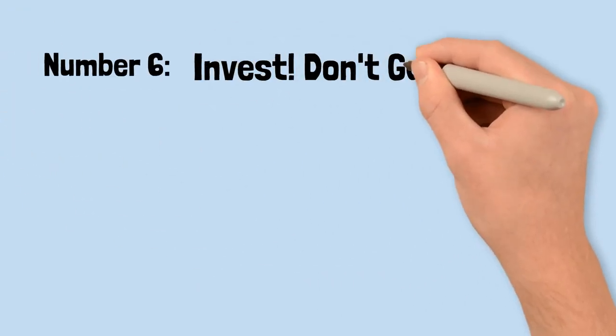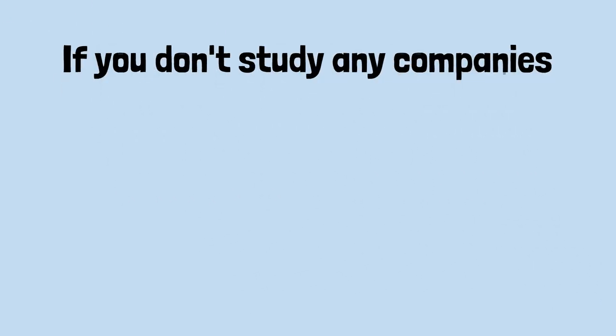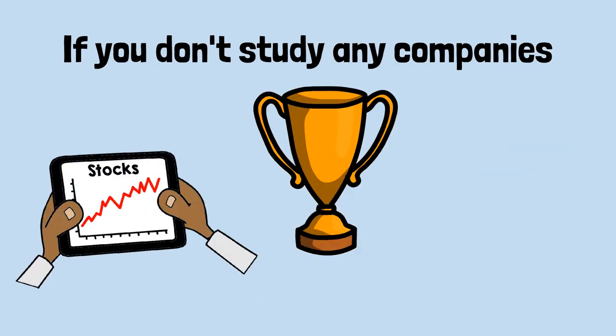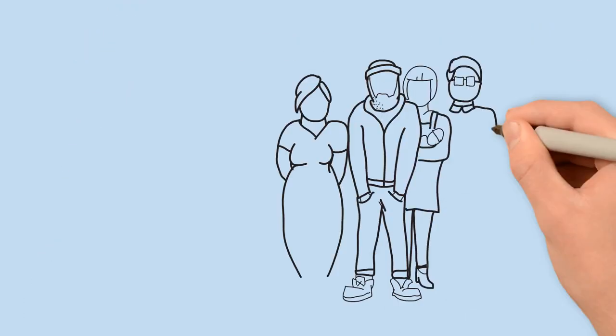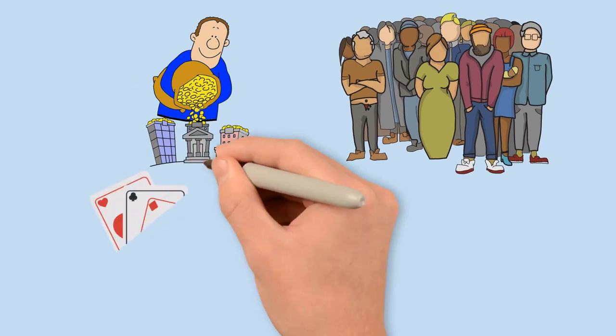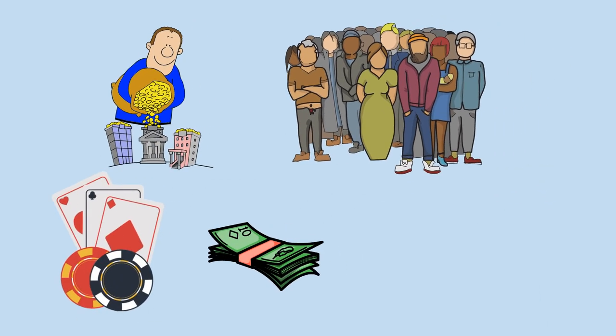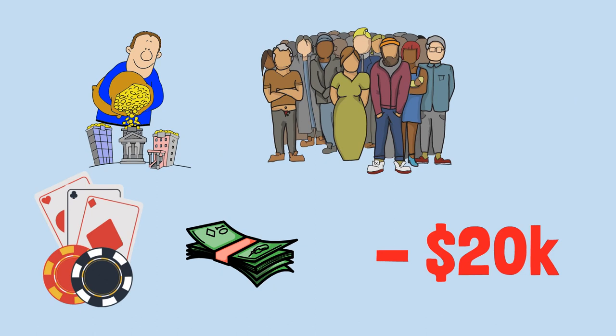Building upon the last tip, number 6 is invest, don't gamble. Lynch says, if you don't study any companies, you have the same success buying stocks as you do in a poker game if you bet without looking at your cards. Too many people claim to be investing, but in reality, they are gambling with their money—a dangerous game that often results in substantial losses.